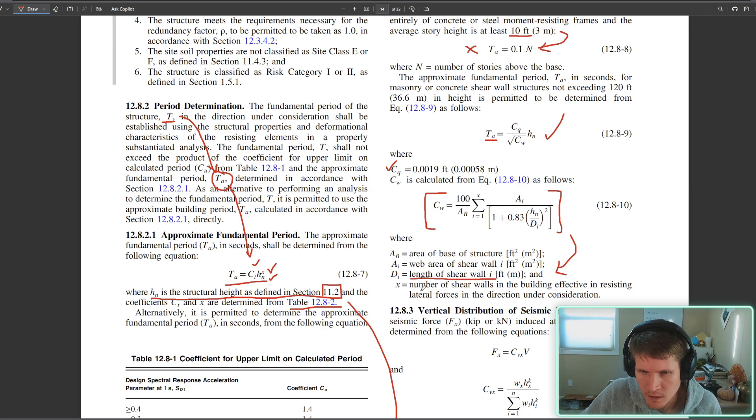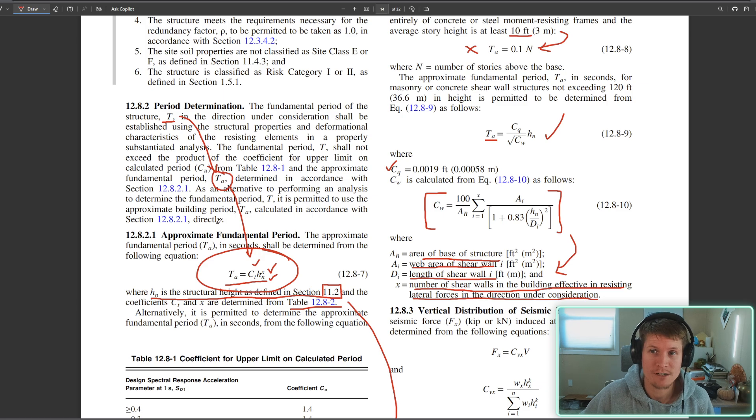They then provide definitions for the variables within them, and if you read through those definitions you'll see that it gets into length of shear wall, number of shear walls in the building, effective in resisting lateral forces, web area of shear wall, area of base structure. It asks for a lot of additional criteria that we weren't provided in the question. So this is kind of an avenue that we're not going to want to explore because we would have to start assuming things, and that's something that we don't want to do. We are going to stick with the original equation, which is completely acceptable to move forward.